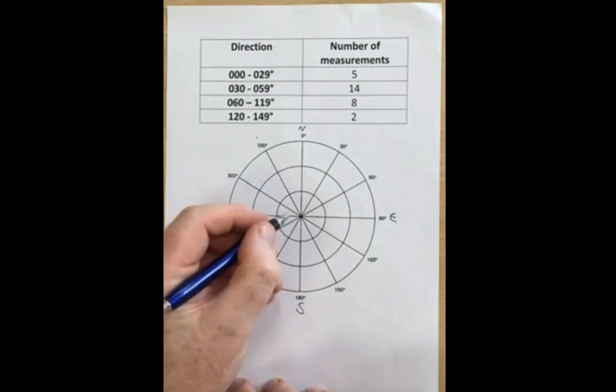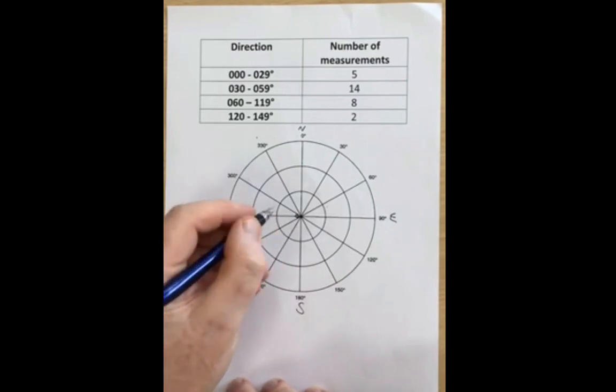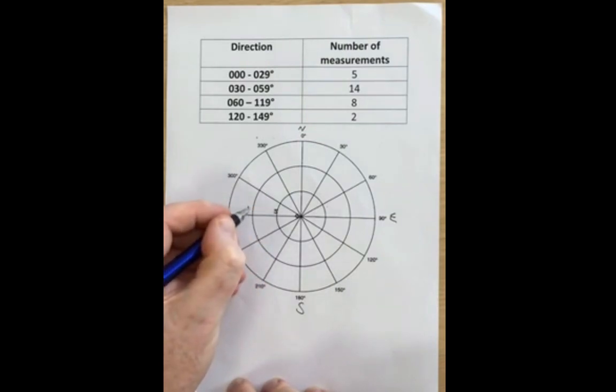So what I'm going to do is use the center as zero, the first of these rings is five, the second as 10, the third as 15.